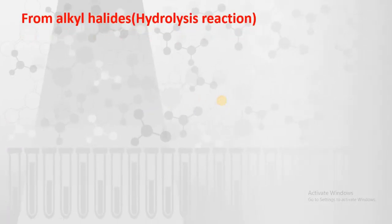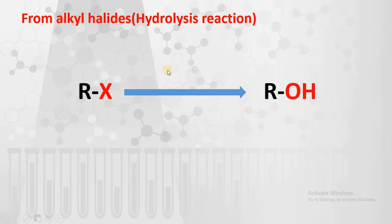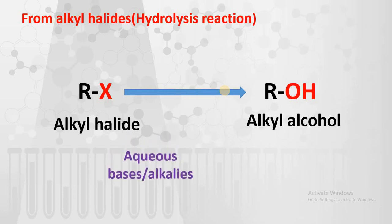Here, alkyl halides when hydrolyzed in presence of some aqueous base gives alcohols. This RX, that is nothing but the alkyl halide group, where X may be chlorine, bromine, iodine, or fluorine, which when reacts with some reagent produces this alcohol or OH. So these alkyl halides are going to convert into alkyl alcohols. What we are using in this reaction is aqueous bases or alkalines, or you can use aqueous silver oxide also.